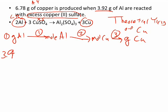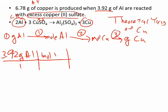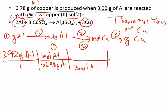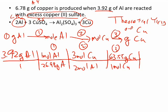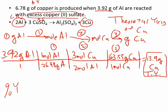Starting with 3.92 grams of aluminum, we convert using 1 mole of aluminum per 26.98 grams. Then we go from moles of aluminum to moles of copper using the equation: 2 moles of aluminum per 3 moles of copper. Finally, we convert using 63.55 grams per mole of copper. We expected 13.9 grams of copper — this is the theoretical yield.